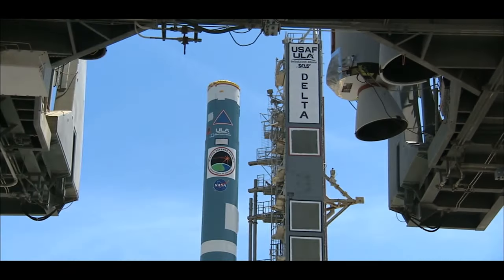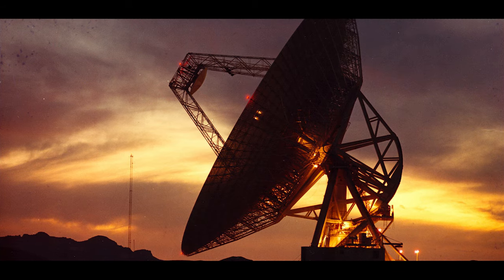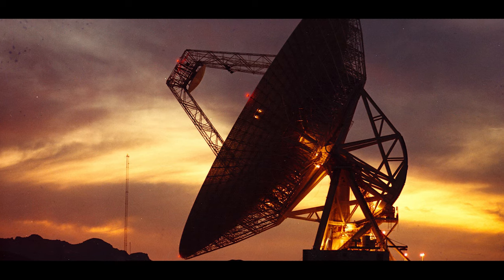It was launched on a Delta II rocket, and was the first spacecraft to use an Earth-trailing orbit. Communication with Earth was handled by NASA's Deep Space Network.